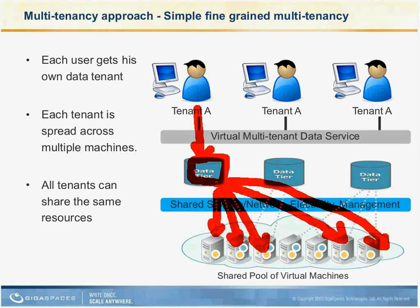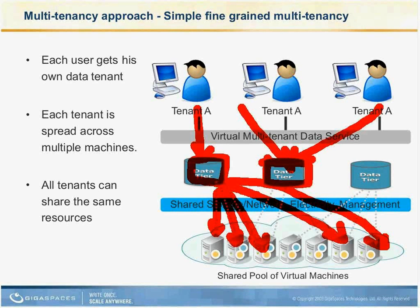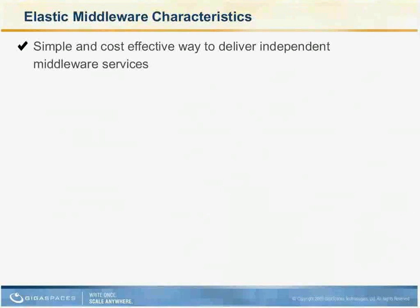Another model allows even the same distributed virtualized data service to be shared among multiple users — useful when those users need to share data and you don't want to point them to completely different databases. In some cases this is also more efficient because having more users on the same data grid means they can better share JVM resources. That summarizes the multi-tenancy approaches — trying to make it simple yet efficient.